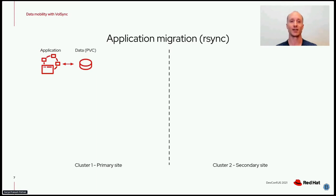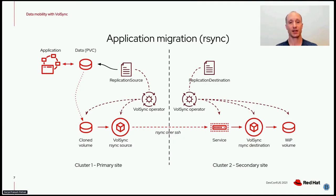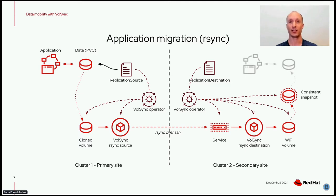In the first demo, we're going to show how VolSync can be used to migrate a stateful application between clusters. Here, we have an application running on a primary site, and we want to move it to the secondary. To move the data, we have the VolSync operator deployed in both clusters. Once all the data has been sent, the destination creates a snapshot of the volume to preserve a point-in-time record. Subsequent synchronization iterations just send updates and generate new snapshots. When the time comes to actually move our application, the latest snapshot is used to create a PVC for the application.